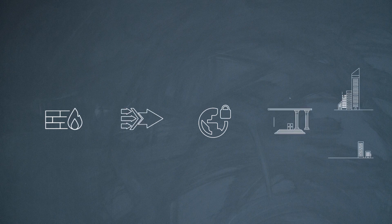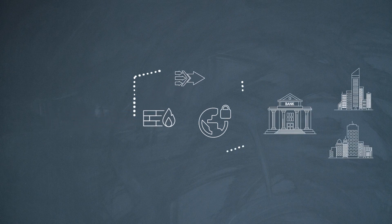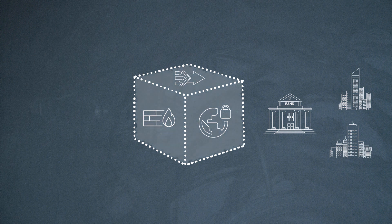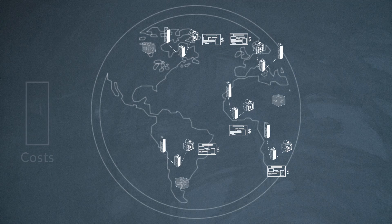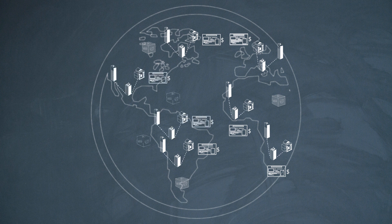Of course, this probably isn't the only branch, so the costs just go up with the size and continued growth of the enterprise. In an NFV model, all three of those functions could be hosted in a single compute hardware platform as software applications. This saves not only on the cost of the hardware, but the space and the power consumption of all of those appliances.